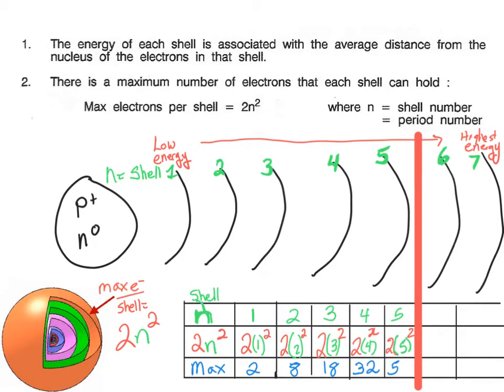But we can go ahead and figure it out for the sixth shell. The sixth shell would be 2 times 6 squared. So 6 squared is 36 times 2. We get 72 electrons is the maximum. And for the seventh shell, 2 times 7 squared, which is 2 times 49, or 98 electrons, is the maximum number of electrons that we could find in the seventh shell.